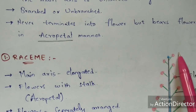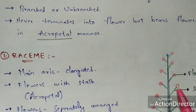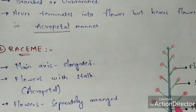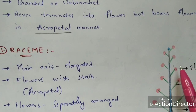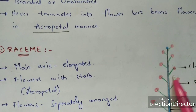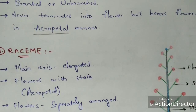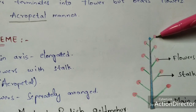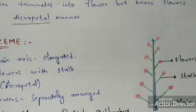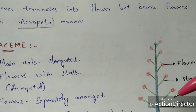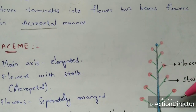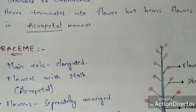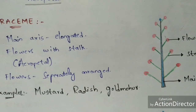The main axis consists of flowers — either those flowers will consist of a stalk or they may not consist of any stalk. In the diagram, the main axis is elongated and it consists of flowers. These flowers are arranged in an acropetal manner — that is, when the flowers move from bottom to top, the size of the flower decreases, from large size at the base to small size at the top. That development manner is called acropetal manner.